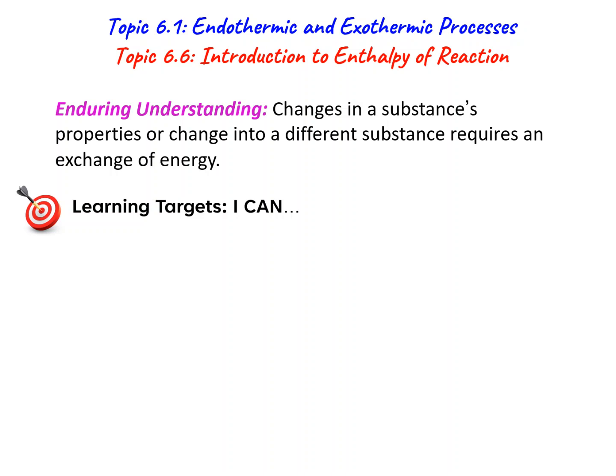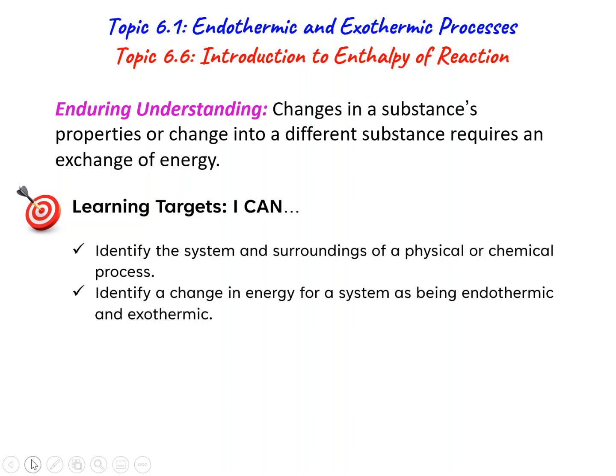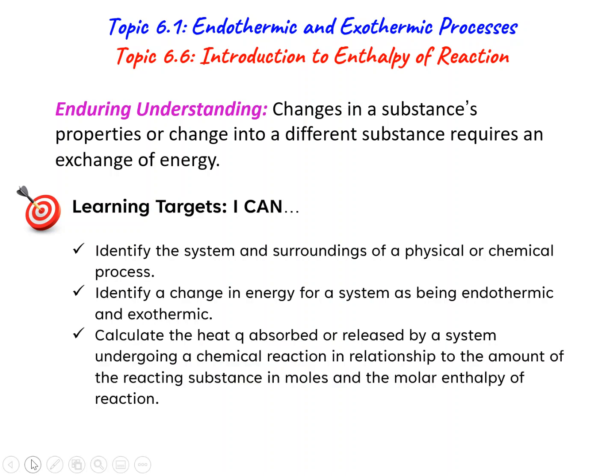Enduring understanding: changes in a substance's properties or change in different substances requires an exchange of energy. So we're going to learn about system and surroundings for physical and chemical processes, identify those, identify change in energy of a system as being endo- or exothermic, and calculate the heat Q absorbed or released by a system undergoing a chemical reaction in relationship to the reacting substance in moles and the molar enthalpy — basically stoichiometry with heat in it.